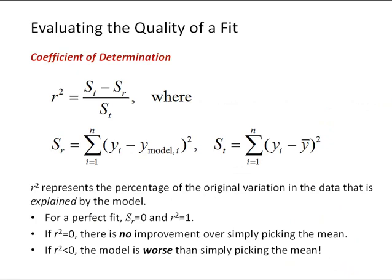So once we've calculated our coefficients, one thing we'd like to do is evaluate the quality of the fit. One measure we can use to do that is called the coefficient of determination. And the coefficient of determination, or the R squared value, is defined as ST minus SR divided by ST. Whereas ST is the sum of the squares of the residuals with respect to the mean, and SR is the sum of the squares of the residuals with respect to that model. Now this is a generally applicable measure of the curve fit even as we move forward into some non-linear curve fitting techniques. R squared represents the percentage of the original variation in the data that is explained by the model. So if we had a perfect fit, that means that SR would be 0 and R squared would be equal to 1.